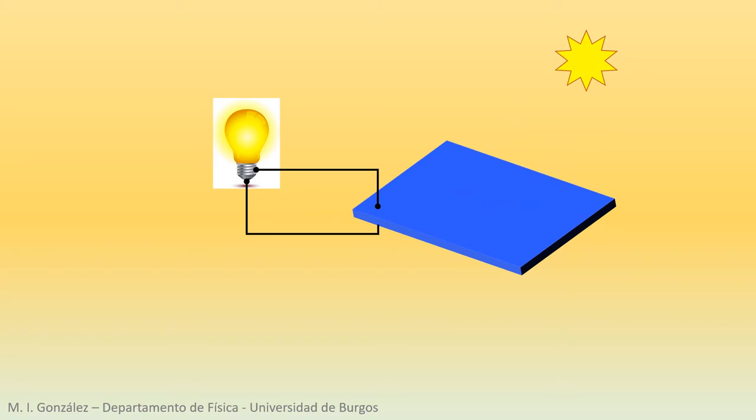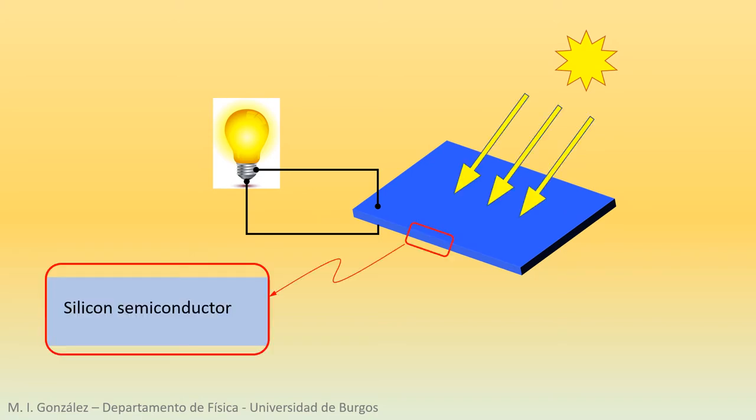Photovoltaic devices convert solar radiation into electricity. The properties of semiconductor materials such as silicon make this conversion possible.